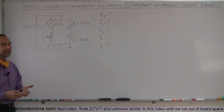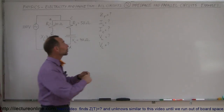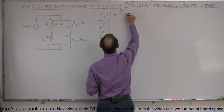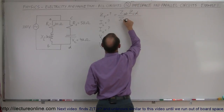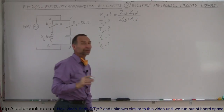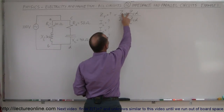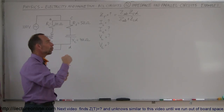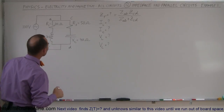First we want to find the total impedance. Since it's a parallel branch, the total impedance is the product over the sum: the impedance from A to B times the impedance from C to D, divided by the impedance from A to B plus the impedance from C to D. When we multiply impedances, we use magnitude and phase angle form. When we add impedances, we use complex number form.